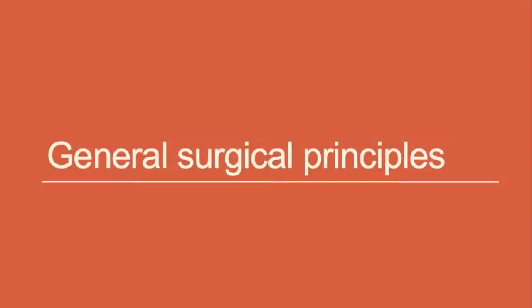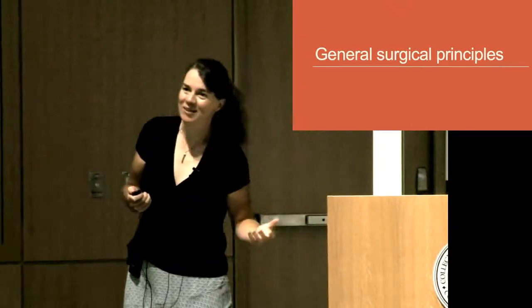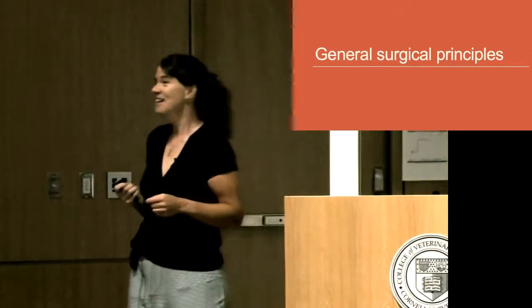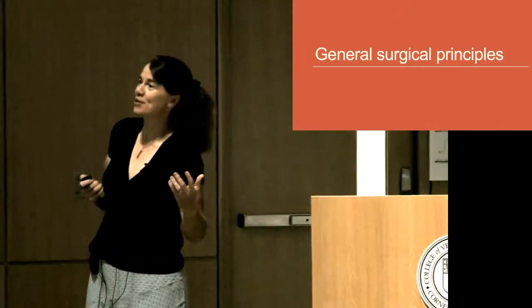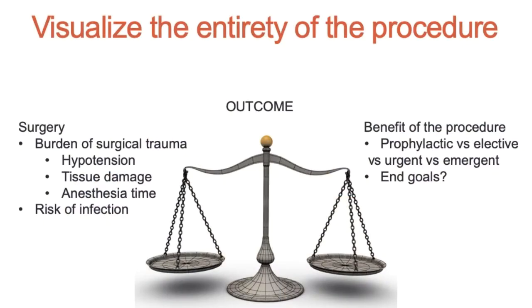General surgical principles: what I wanted to talk about in this first segment is things I use for every surgery, every day — whether it's an eye procedure, a GI procedure, or any other type. This really starts with the way I conceptualize any surgical intervention: as a dose-response curve. We're used to thinking of medications as dose titration to effect, and I think it's worth conceptualizing a surgical procedure the same way.